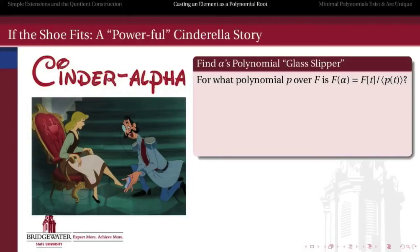I call it a Cinder-alpha story. The job is to find the glass slipper that matches our algebraic number, Cinder-alpha. So for what polynomial p over f is the extension, the simple extension f adjoin alpha, the same thing as the quotient of the polynomial ring of f by the principal ideal generated by that polynomial? Ultimately we're going to need that polynomial to be irreducible, but for now we just want any old polynomial. So we're going to look at four examples in this video.